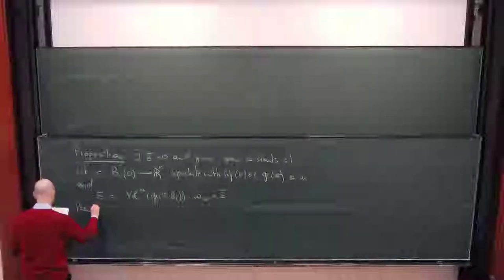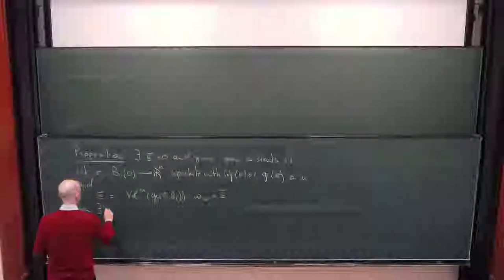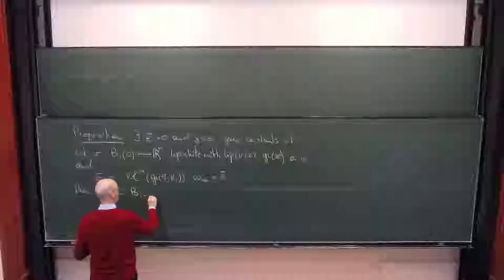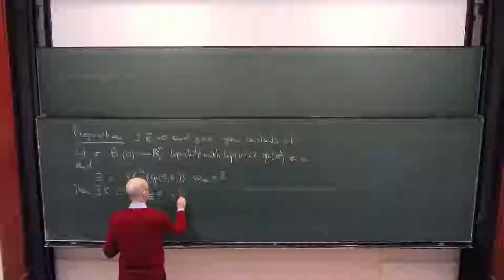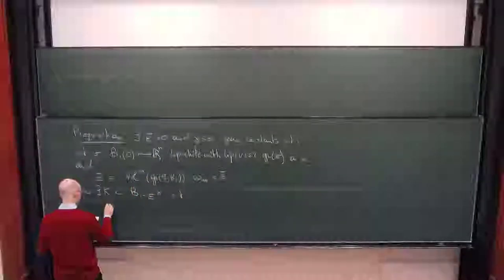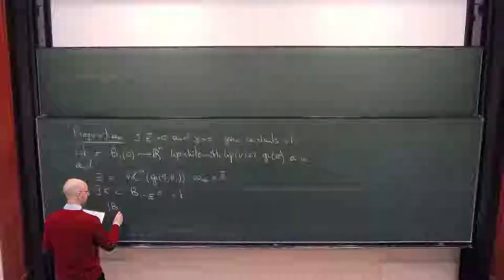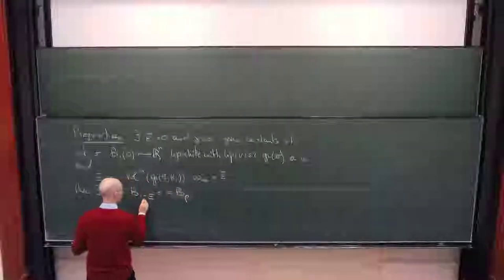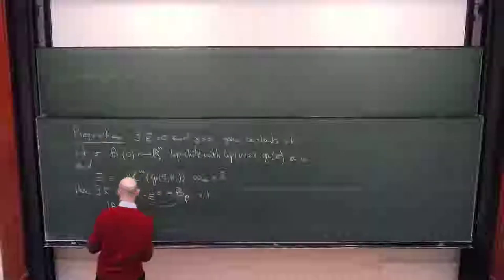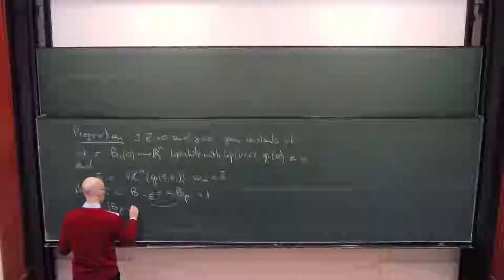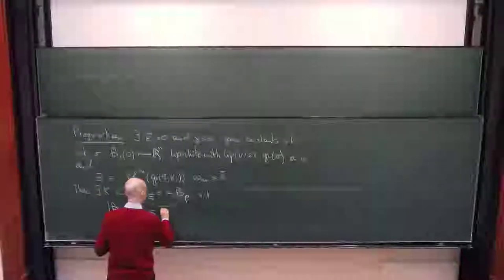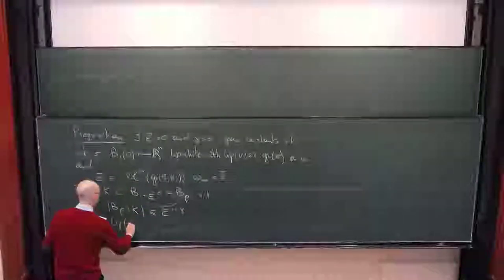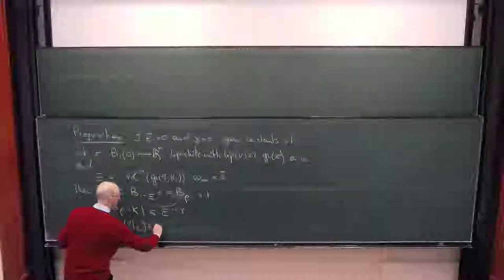What we claimed is that there exists a set K inside, with measure one minus E to the power gamma, which satisfies the following two estimates. What is left in the ball of radius rho outside of this set K is less or equal than E to the power 1 plus gamma. And the Lipschitz constant of the restriction of V to this set K is controlled by E to the power gamma.